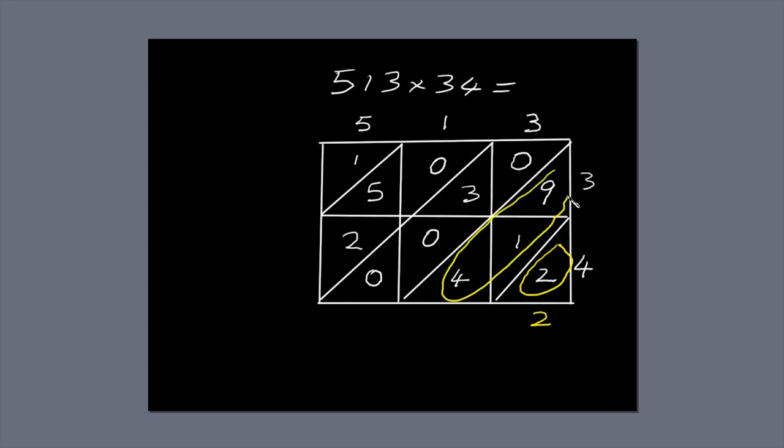The next diagonal has three numbers. 9, 1 and 4. 9 plus 1 is 10, plus 4 is 14. Write the 4 below the diagonal and carry the 1 across to the next diagonal.